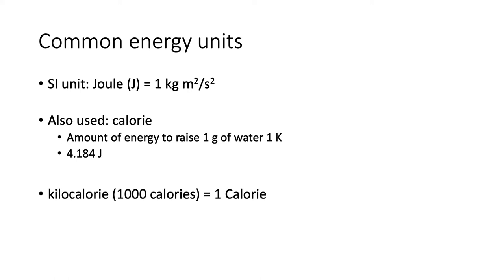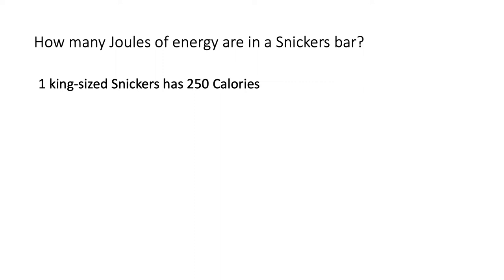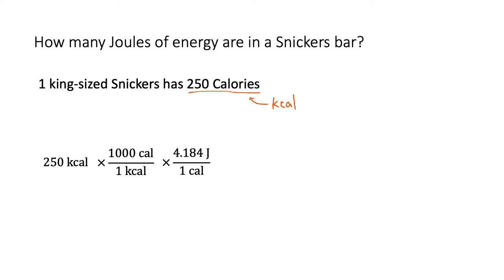So we Americans do everything differently, and that may not be a good thing. You might wonder how many joules of energy are in a Snickers bar. A king-sized Snickers bar has about 250 calories — and remember those are capital C calories, which a scientist would call kilocalories. So we have 250 kilocalories, with 1,000 calories in every kilocalorie, and each calorie is 4.184 joules. That tells us there are over a million joules of energy in a Snickers bar.